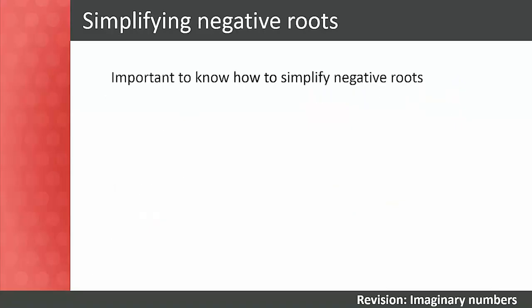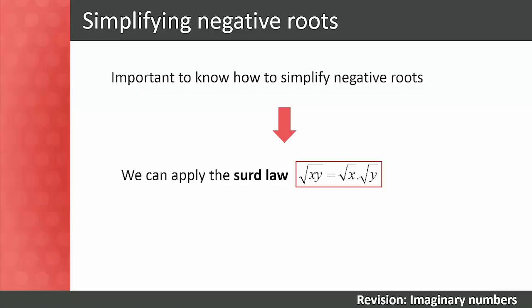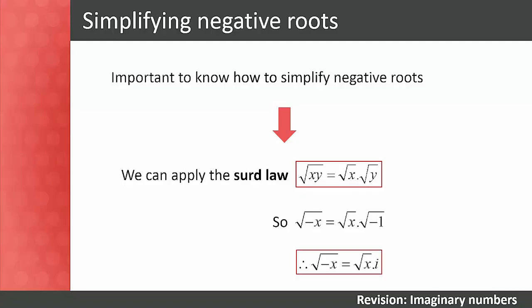When working with imaginary numbers, it is also important to know how to simplify negative roots. We apply the third law: √(xy) = √x × √y. Therefore √(−x) = √x × √(−1) = √x × i. In other words, the square root of negative x equals the square root of x times i.